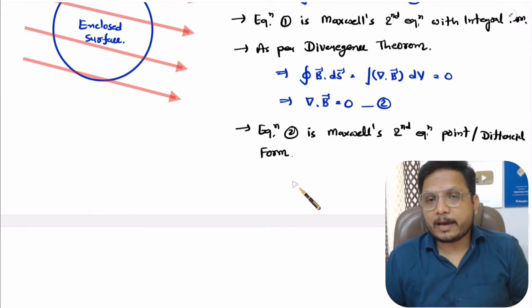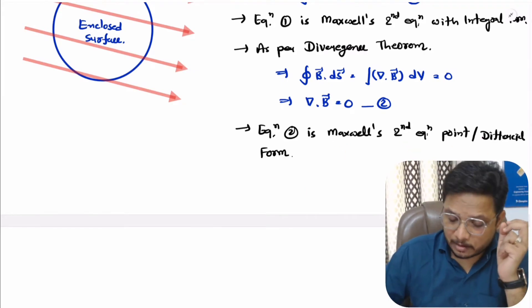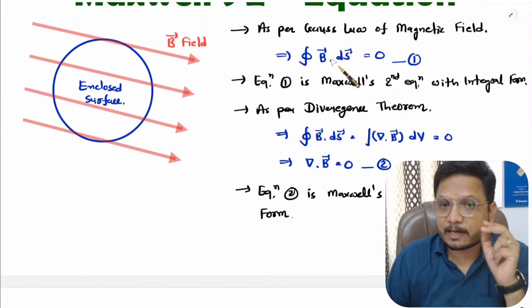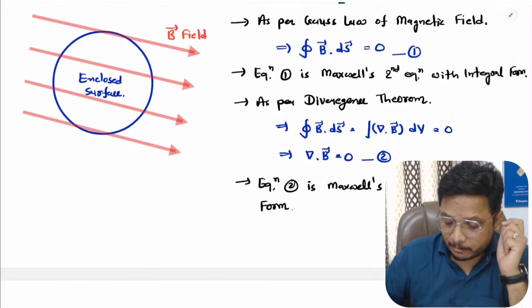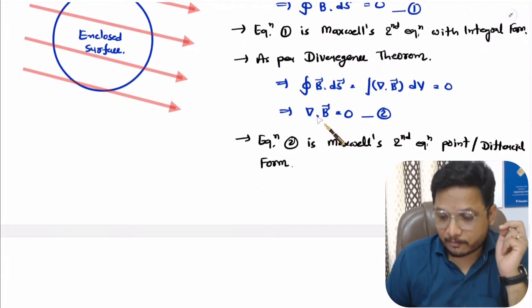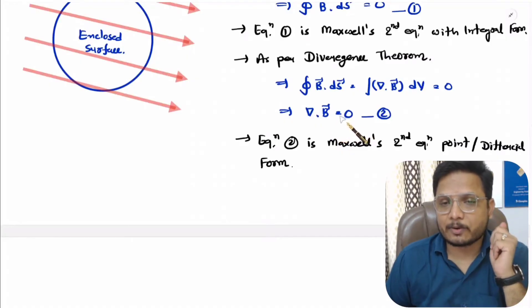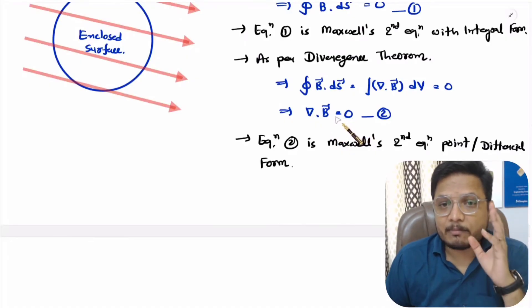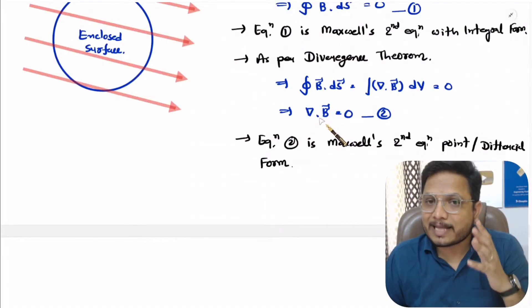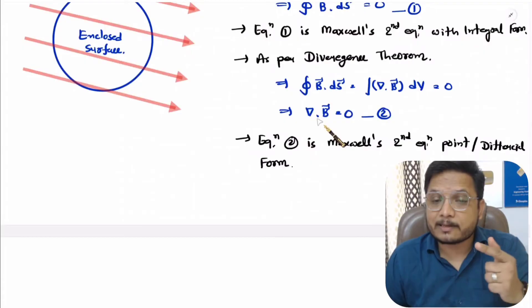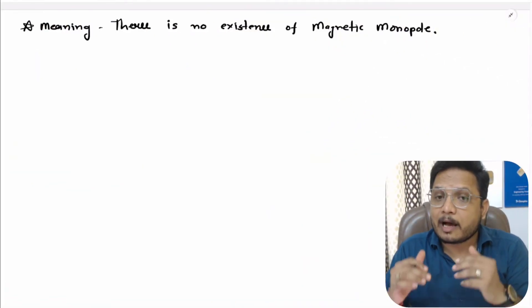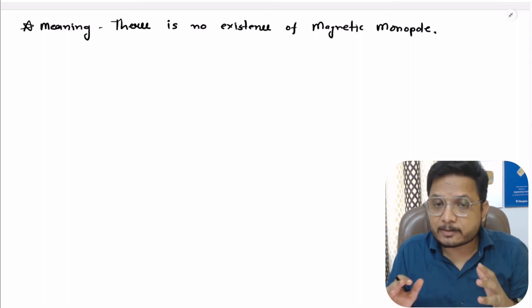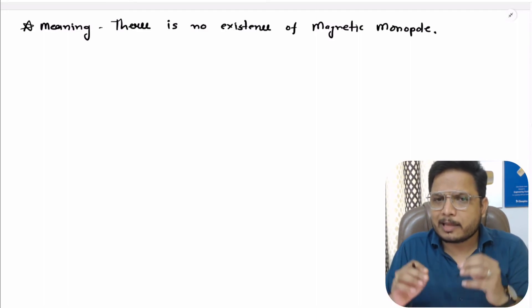So now we have Maxwell's second equation in integral form — the surface integration of the magnetic field over a closed surface is zero — and in point form — divergence of B is zero. Now, what is the physical meaning of this equation? One meaning is that there is no existence of a magnetic monopole. Let me explain how.